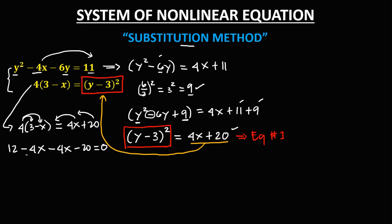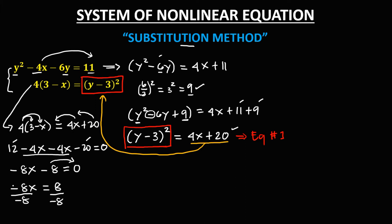Combine like terms: negative 4x and negative 4x gives negative 8x, then positive 12 minus 20 is negative 8, so negative 8x minus 8 equals 0. Transpose the negative 8 to the right side, so negative 8x equals positive 8. Divide both sides by negative 8 — cancel — so x is equal to positive divided by negative, that's negative, and 8 divided by 8 is 1. So x is equal to negative 1.